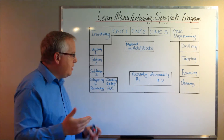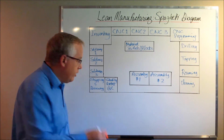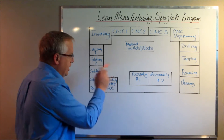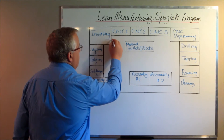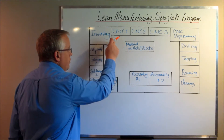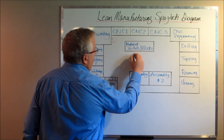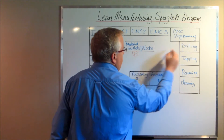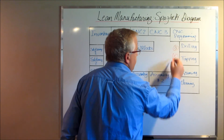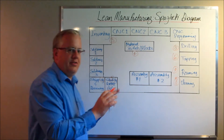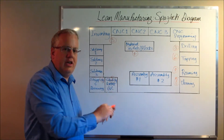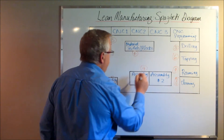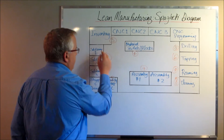Next, define each one of the steps using sequential numbers. Step one is shipping and receiving, number two is quality control where material comes in and gets inspected, number three is inventory where it gets accounted for, number four is the CNC machining area, then five through eight cover drilling, tapping, reaming, and cleaning. Number nine is assembly and tuning, and number ten is the soldering stations. Use sequential numbers to designate how the process flows.